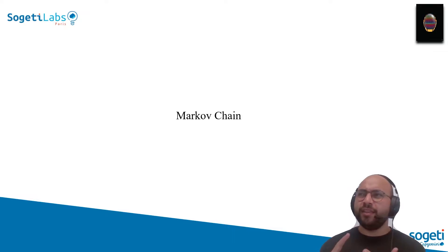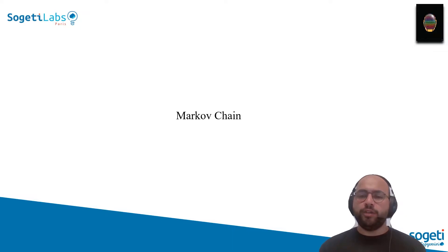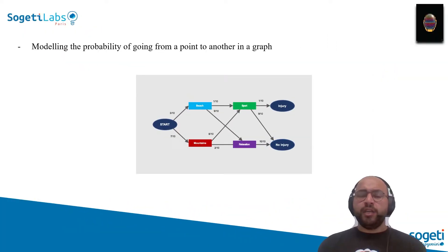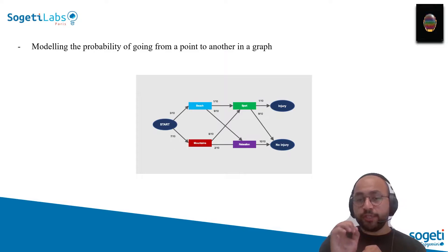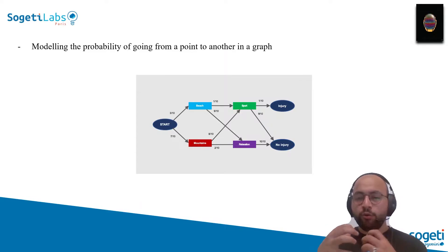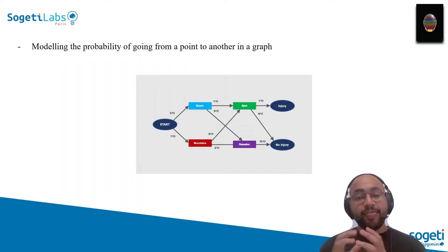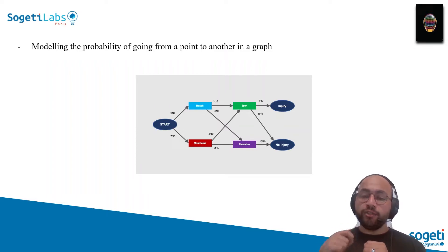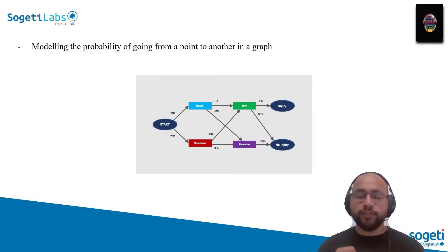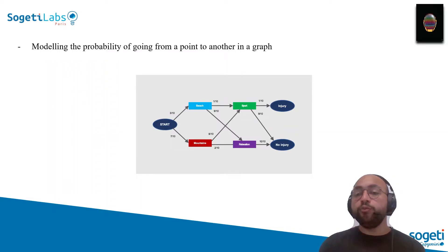Markov chain is used from biology to mathematics to weather prediction — really every field. What is Markov chain? Basically, it's just modeling the probability of going from a certain state to another state in a graph. It takes all the data, computes all the transitions possible, and calculates the probability of a certain state appearing, knowing the previous subsequences of data. That's all it is — just a graph where you maximize this probability.